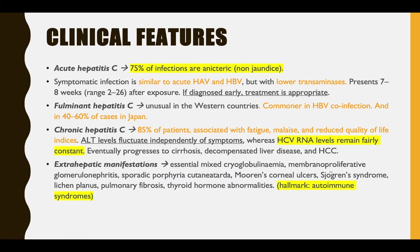For clinical features, 75% of acute Hepatitis C cases are non-jaundiced. They will have the other symptoms we mentioned. Fulminant hepatitis is unusual in Western countries but is a problem in Japan. For chronic hepatitis, 85% of patients will be associated with fatigue, malaise, and reduced quality of life. ALT levels fluctuate, but RNA levels remain fairly constant — and this is what helps you diagnose HCV.